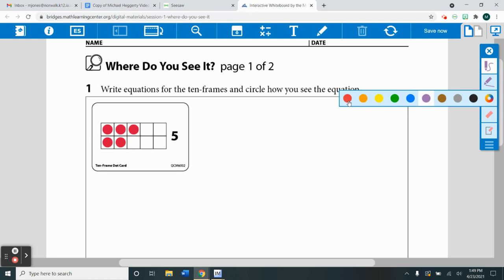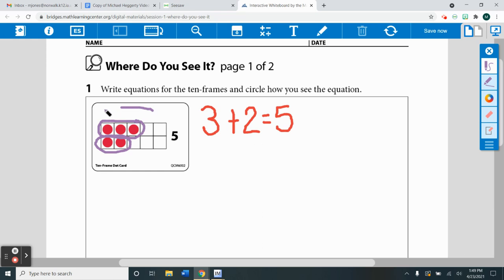I already see an equation. I see three plus two equals five. Then it says to circle how you see the equation. Well, I saw the equation as three plus two, which equals five.